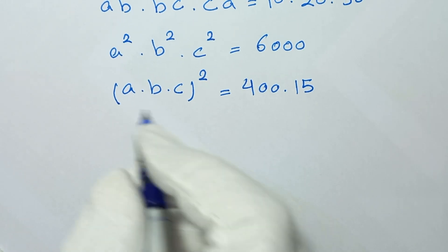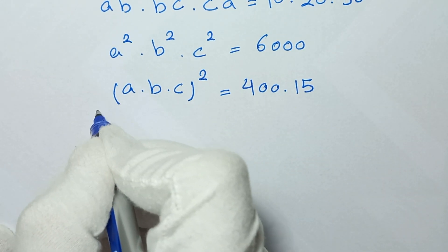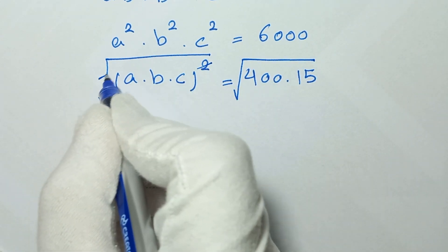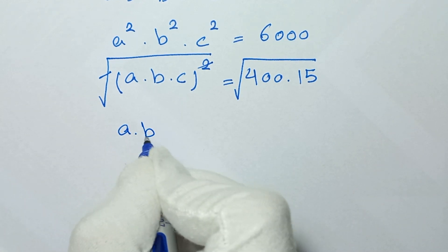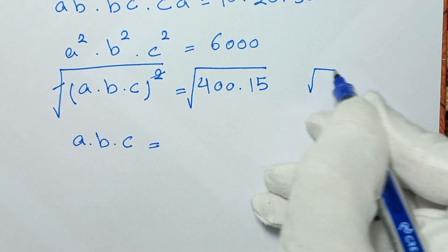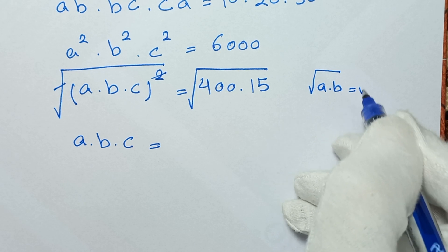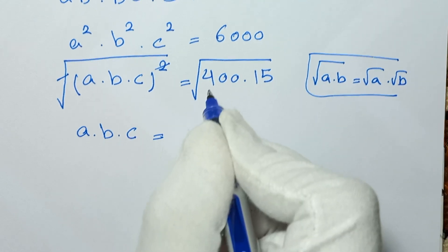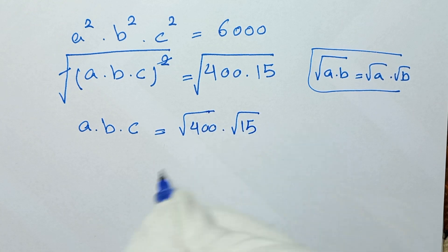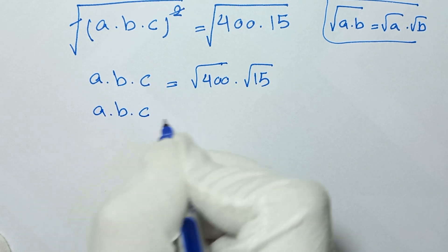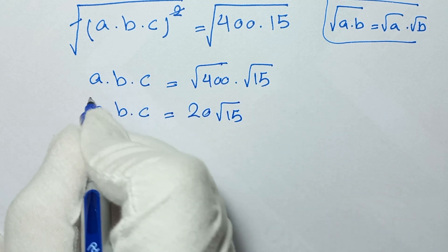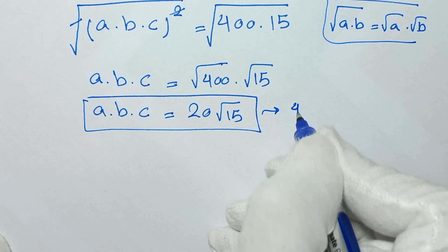In the next step, we apply square root to both sides of the equation. The square root and the square cancel, giving A times B times C equals the square root of 400 times 15. Using the property that √(A×B) = √A × √B, we get A times B times C equals square root of 400 times square root of 15, which is 20√15. We label this as equation number 4.